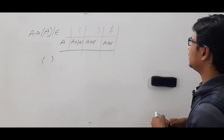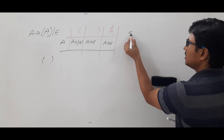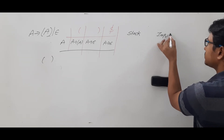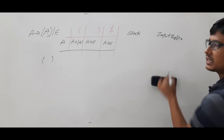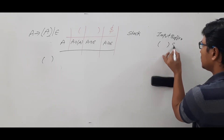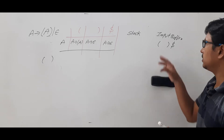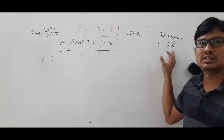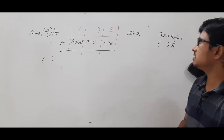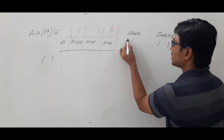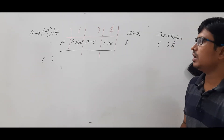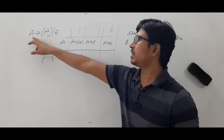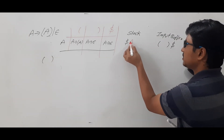Now I will take this string in the input buffer. You have a stack and an input buffer. In the input buffer, keep the string you want to generate: open braces, closed braces, dollar — where dollar represents the end of the string. The top of the stack initially consists of dollar, and then we push the start symbol of the grammar, which is capital A.